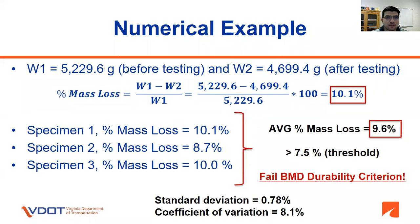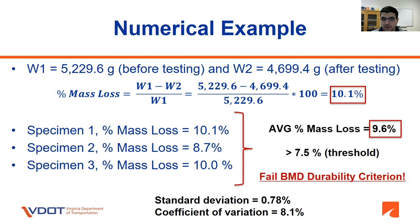Numerical example: for a given specimen, W1 (initial mass before testing) is 5,229.6 grams, and W2 (mass after testing) is 4,699.4 grams. The percent mass loss is calculated as W1 minus W2 over W1 times 100, which equals 10.1 percent. Specimen 2 yields a percent mass loss of 8.7 percent, and specimen 3 yields 10 percent. The average percent mass loss for the three specimens is 9.6 percent. Since this average is greater than the 7.5 percent BMD threshold, this asphalt mixture fails the BMD durability criterion.